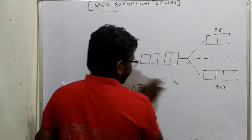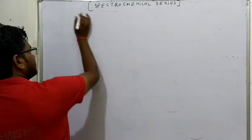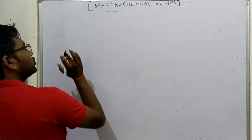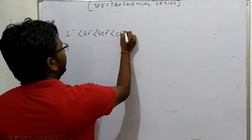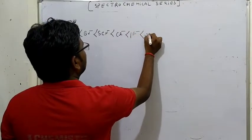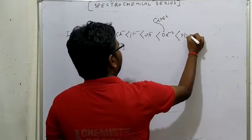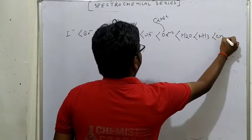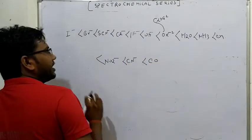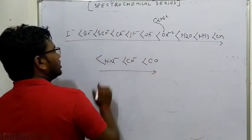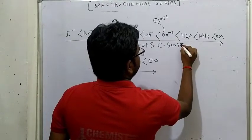Strong Field Ligand ज्यादा splitting करेंगे और Weak Field कम करेंगे। यह spectrochemical series का increasing order है - Iodine (I⁻), Bromine (Br⁻), SCN⁻, Cl⁻, Fluorine (F⁻), Hydroxyl (OH⁻), Oxalate (ox²⁻ यानी C₂O₄²⁻), Water (H₂O), Ammonia (NH₃), Ethylenediamine (EN), NO₂⁻, CN⁻, और CO। यह spectrochemical series का increasing order है - इसे note कर सकते हैं।